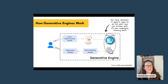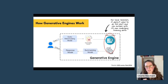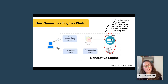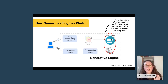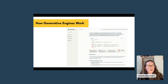Perhaps the most interesting thing to be aware of is that sometimes the web search part — shown in red — doesn't need to happen. Sometimes generative engines like ChatGPT can answer based entirely on their own underlying training data, without actually going to the web to search. Not always, but sometimes.